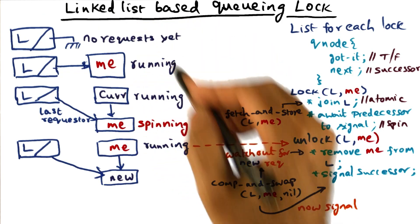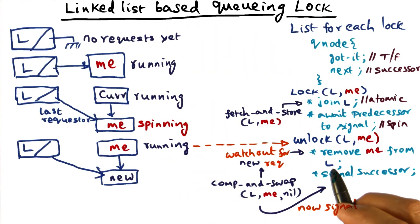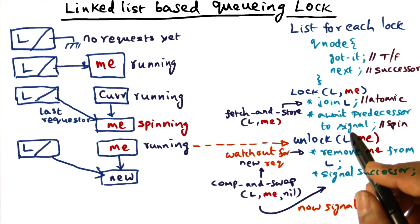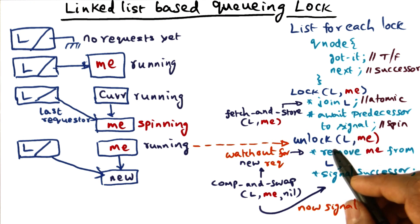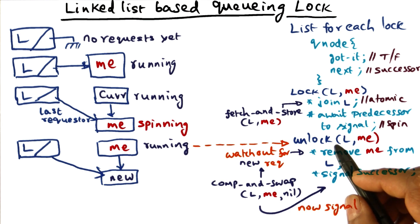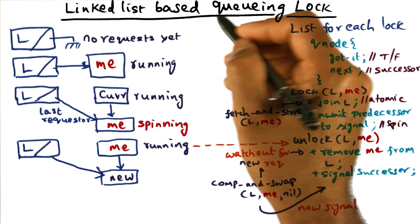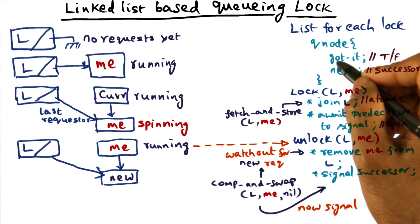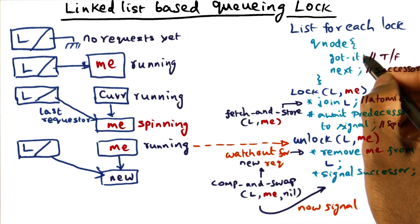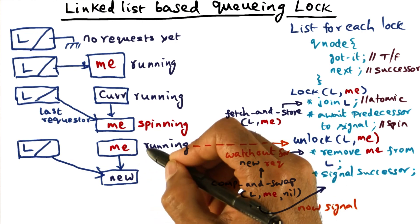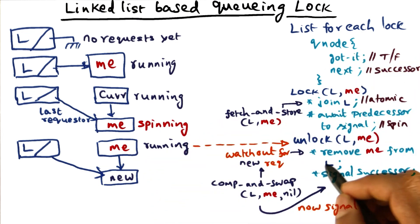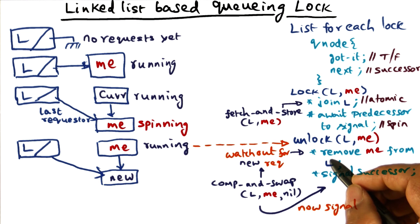Let's talk about the virtues of this linkless based queuing lock. Some of the virtues are exactly similar to Anderson's queuing lock. It is fair — Anderson's lock was also fair, the ticket lock was also fair, and the linkless queuing lock is also fair. The spin location is unique for every spinner; every spinner has a unique spin location to wait on, and that is similar to Anderson's queuing lock as well.